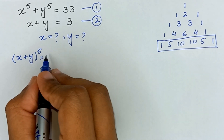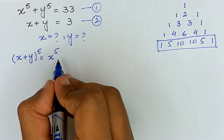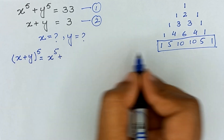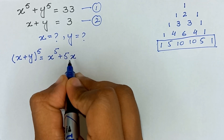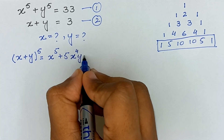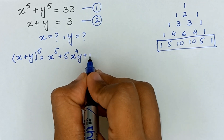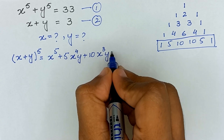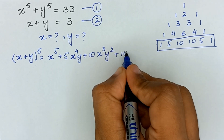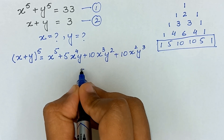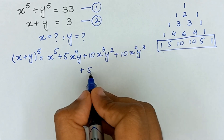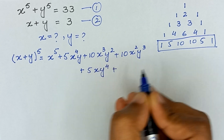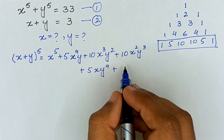Applying the coefficients from Pascal's triangle, (x+y)⁵ expands to: x⁵ (coefficient 1) plus 5x⁴y (coefficient 5) plus 10x³y² (coefficient 10) plus 10x²y³ (coefficient 10) plus 5xy⁴ (coefficient 5) plus y⁵ (coefficient 1).